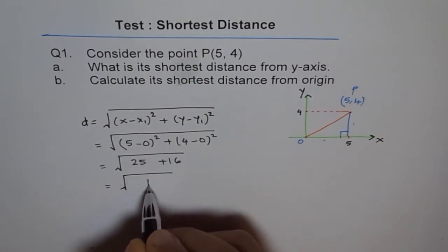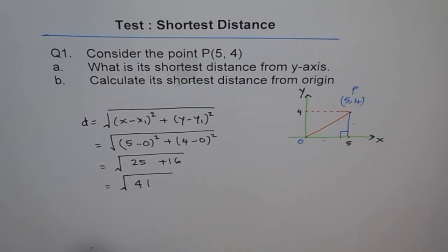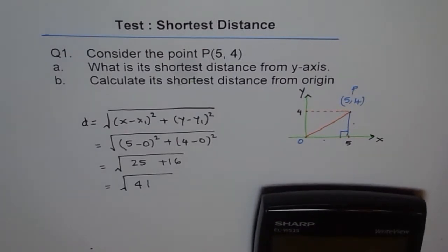25 plus 16 is 41, and then we have √41, correct? At times you will find in the question that the answer says provide exact answer. So this √41 is the exact answer. If they say write your answer to two decimal places, then you need to do square root of 41, and then you say √41 equals to 6.4031.